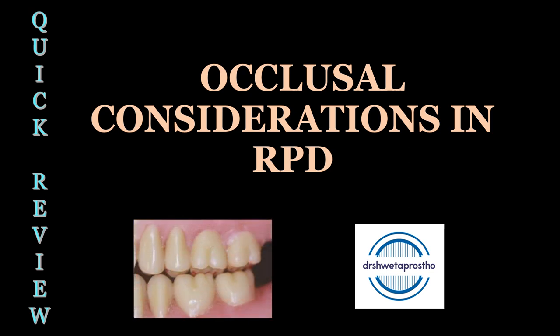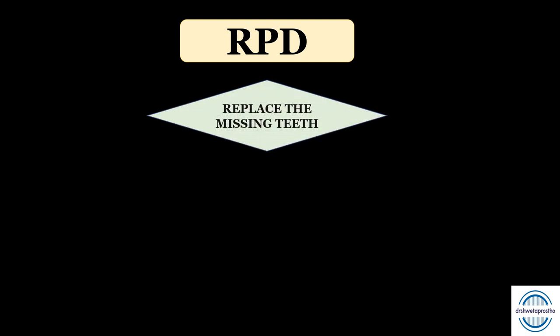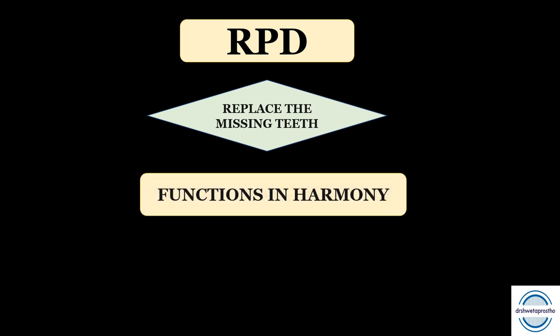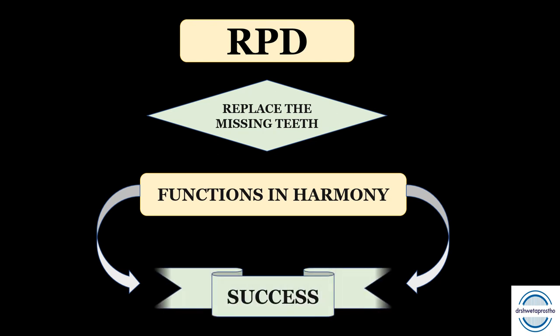We need to make a removable partial denture for a partially edentulous patient. In that case, some teeth are missing and others are present. We need to replace the missing teeth in our prosthesis. For this, our prosthesis should function in harmony with the other remaining oral structures, especially the remaining teeth in the same arch and in the opposite arch. That is what will lead to the success of the prosthesis, so we need to have a perfect occlusion.